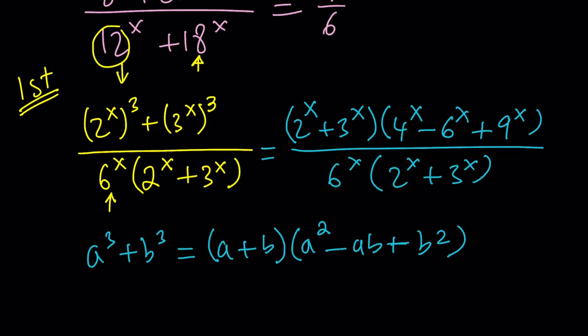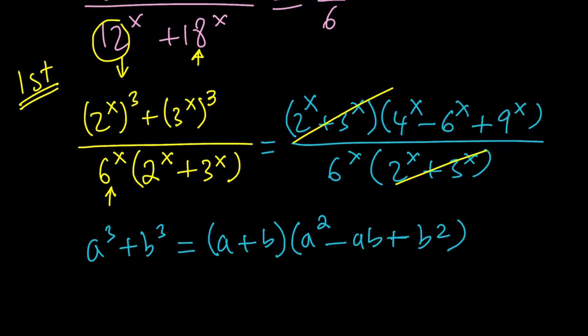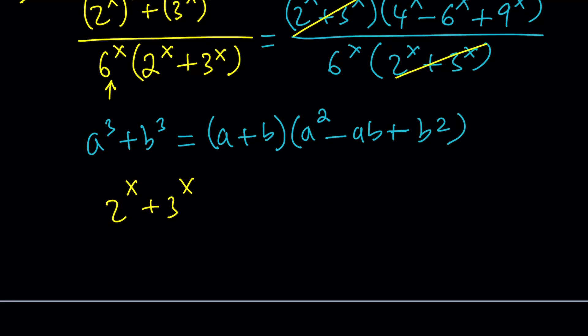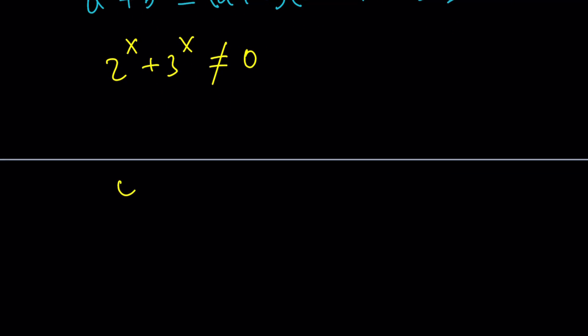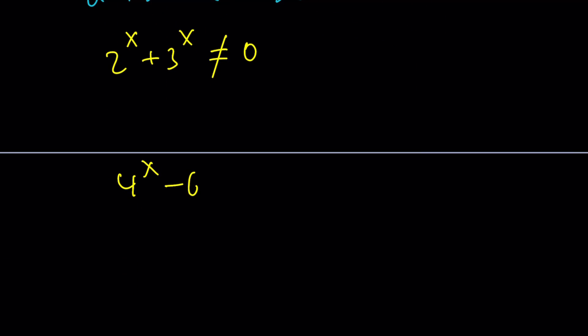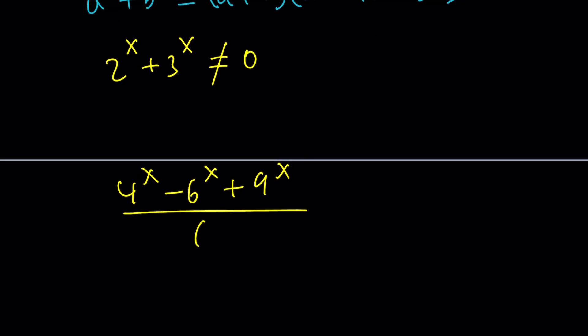Notice that the exponent will always stay the same. You're only going to work with the base. And here we have 6 to the x as a common factor. 2 to the x plus 3 to the x. Awesome. Now, take a look. 2 to the x plus 3 to the x. 2 to the x plus 3 to the x. Cancel out as long as that sum is not equal to 0. But can we guarantee that? Can 2 to the x plus 3 to the x ever be 0? And the answer is not for real numbers. Can that be 0 in the complex world? That's a different question, right? Well, let's go ahead and focus on our problem. Now, we have something simpler.